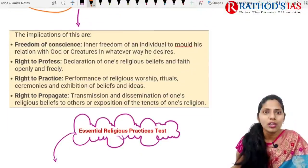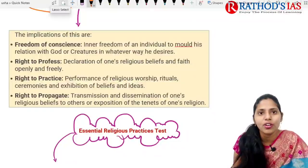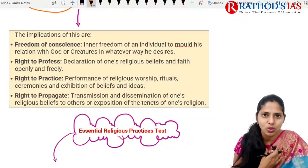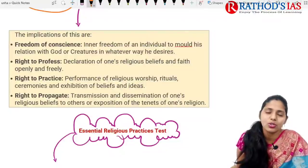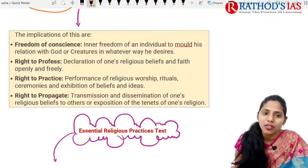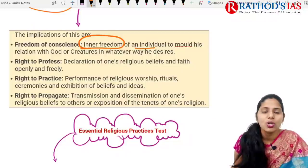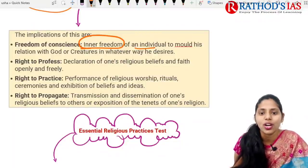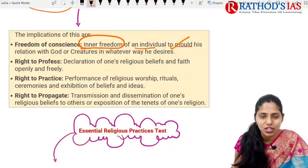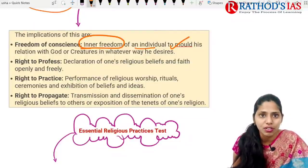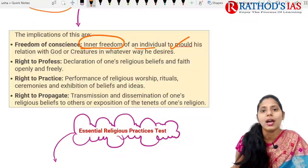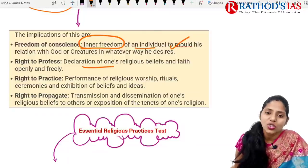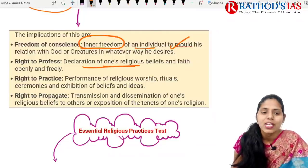The implications of Article 25 include: freedom of conscience, which is the inner freedom of an individual to mold their relationship with God — it is your personal choice whether to believe or not. Right to profess means the declaration of one's religious beliefs openly and freely — for example, declaring 'I am a Hindu' or 'I am a Muslim.'